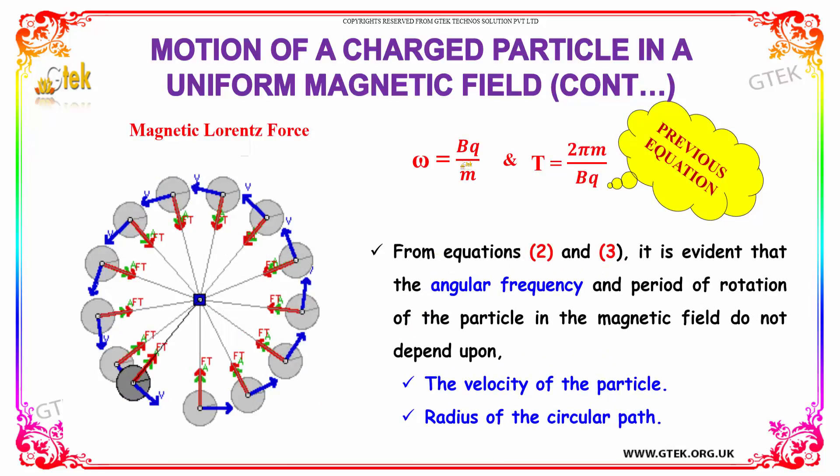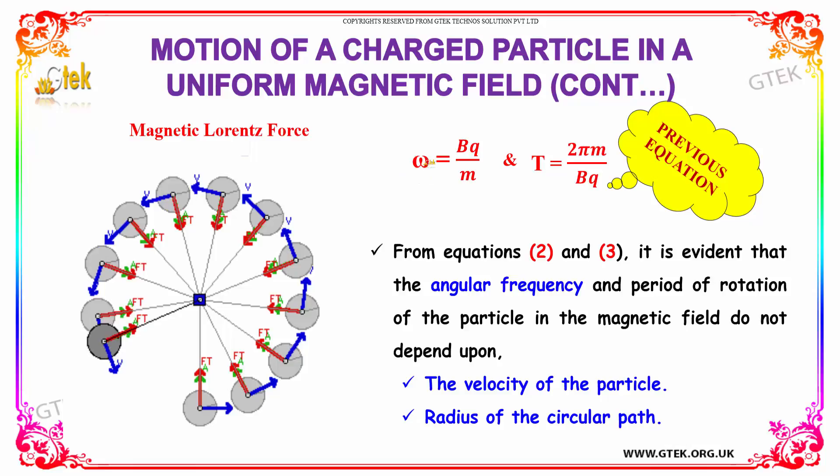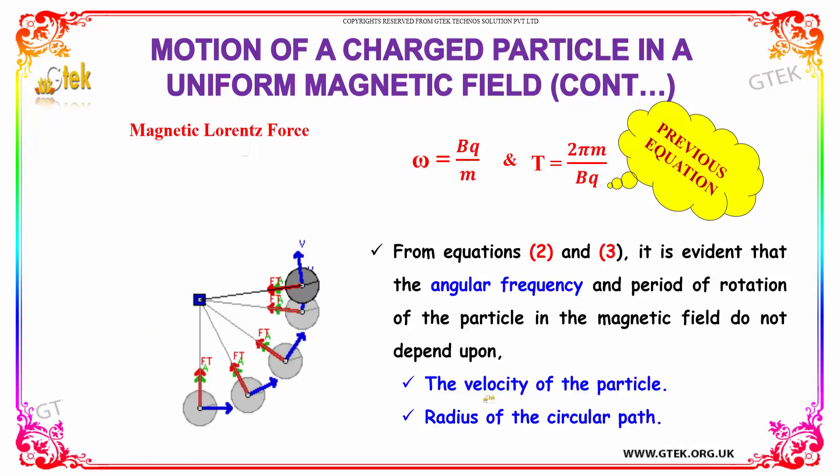So this is the previous equation. And it indicates that the angular frequency and the period of rotation of the particle, it doesn't depend on the velocity of the particle and radius of the circular path.